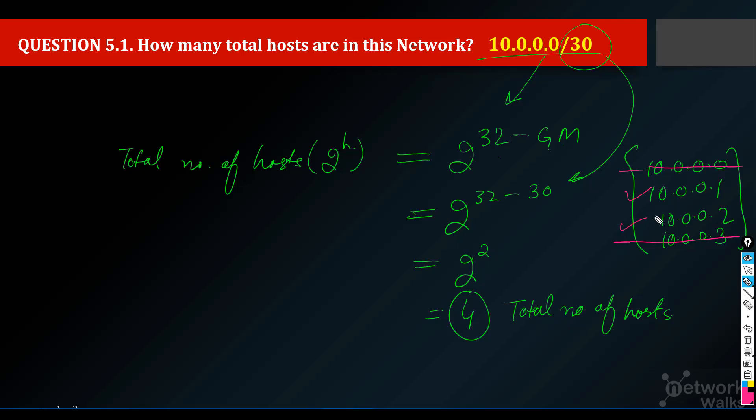The formula for total number of hosts is 2 raised to power h, but total number of usable IP addresses or usable hosts is 2 raised to power h minus 2. So 4 minus 2, which means 2.